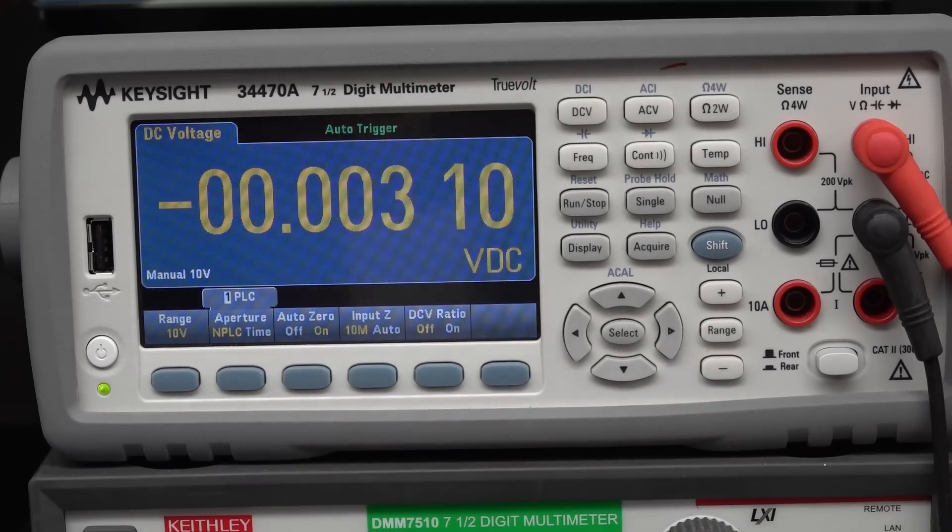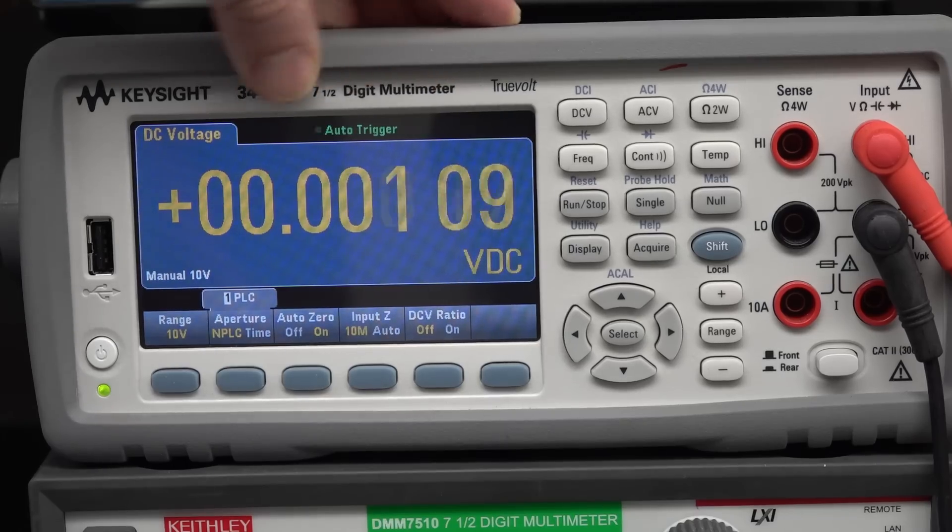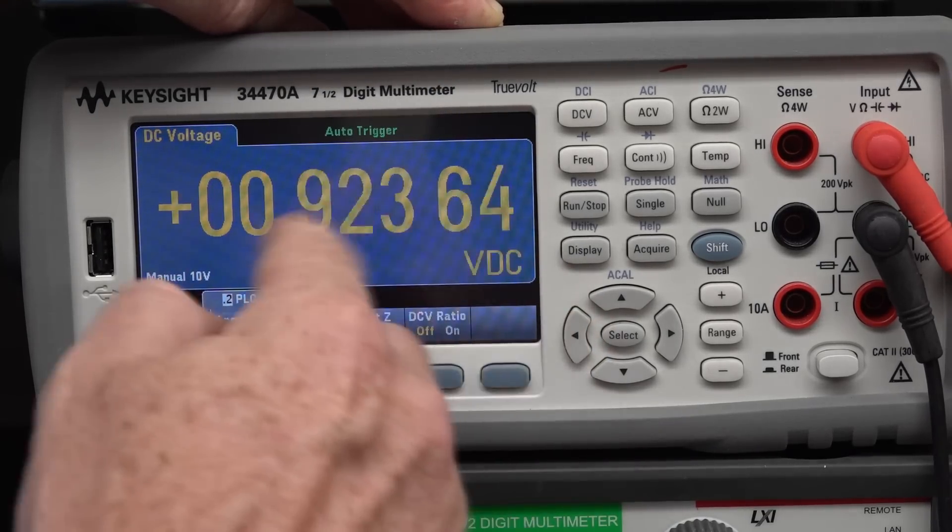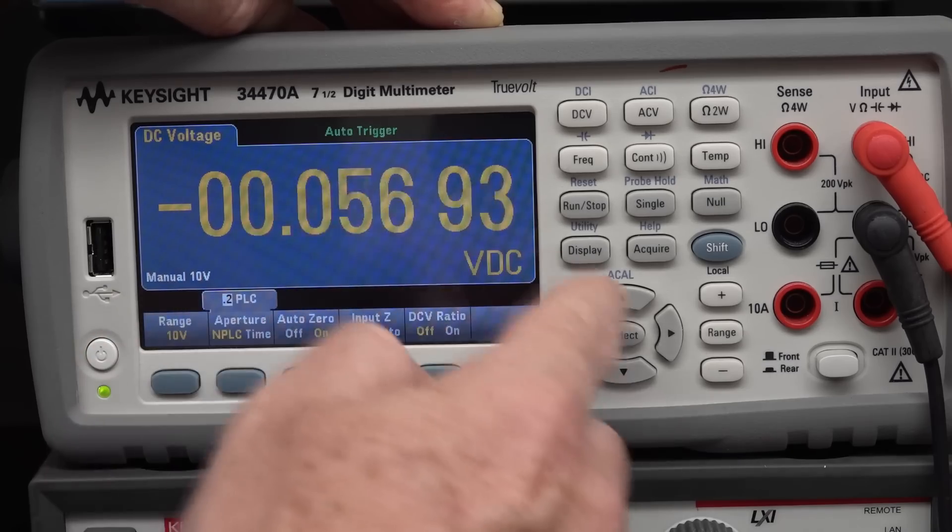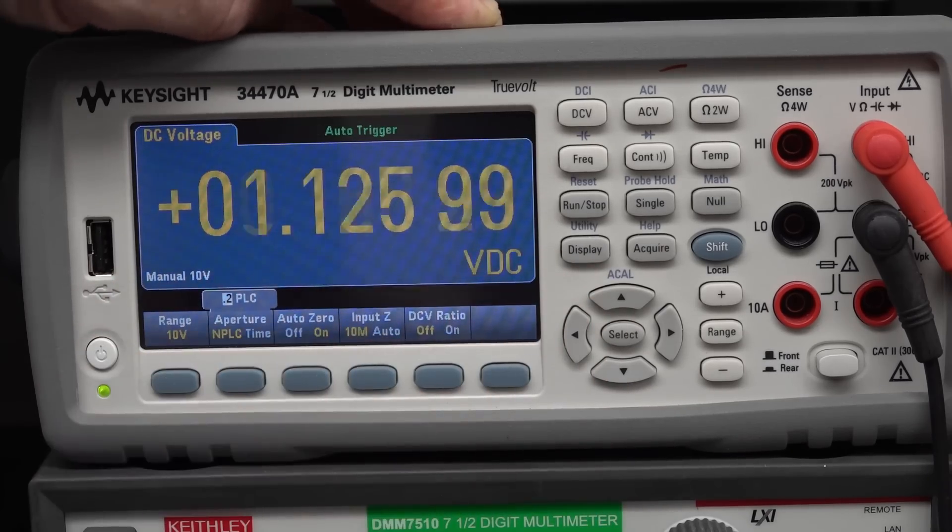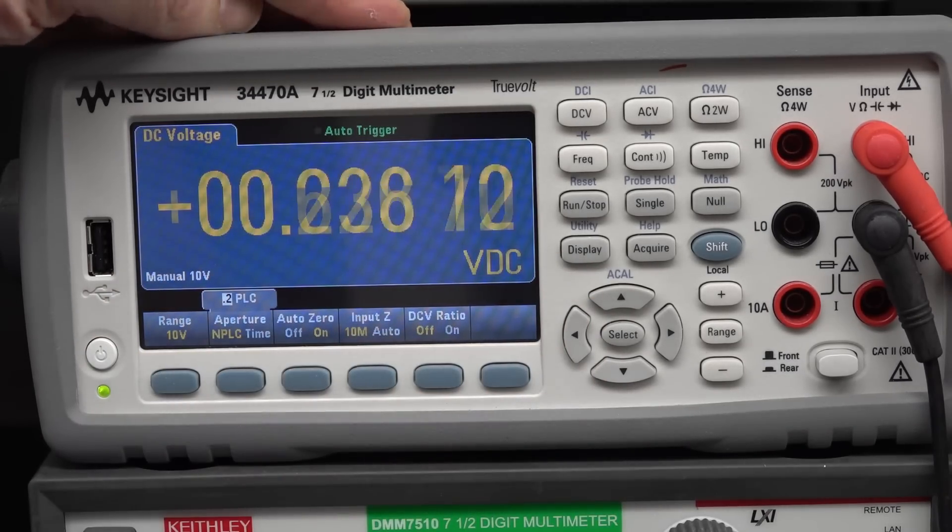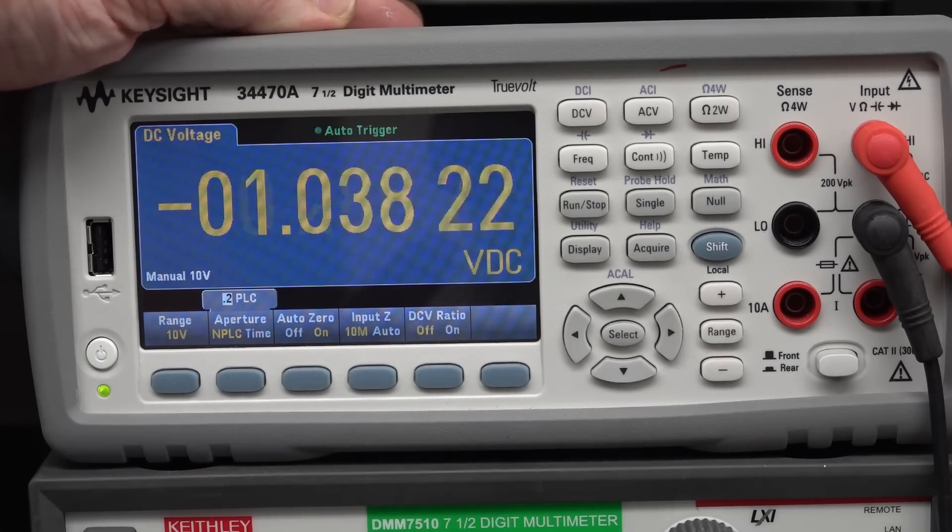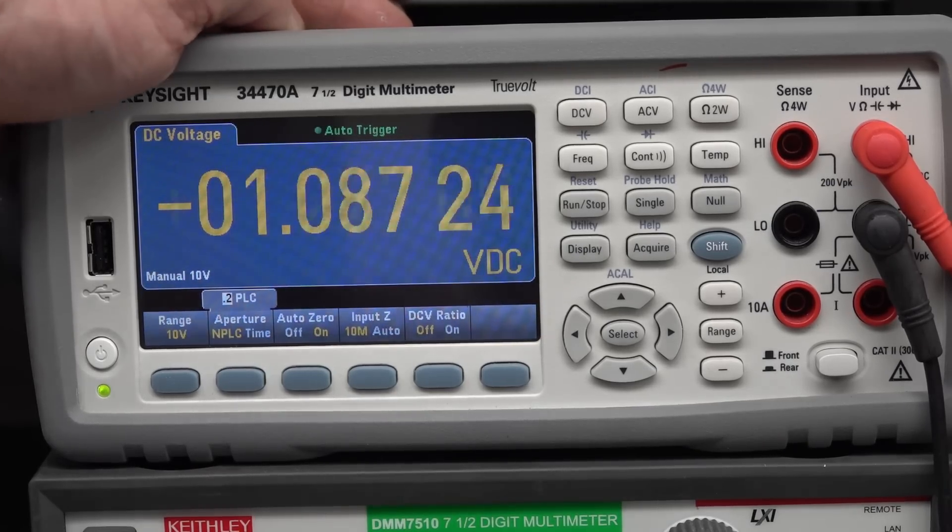And if I go into 0.02 power line cycles, 0.06, we're still getting volts of noise, right? And 0.2, we're still getting quite a lot of noise. But watch what happens when I go to one power line cycle. Ta-da! It's magically vanished. Because it's doing at least one full integration of the 50 or 60 hertz power line cycle. So, you're reducing the noise. And you can see, of course, that we've got more significant digits now.